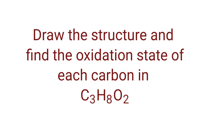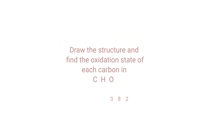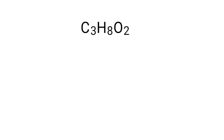Draw the structure and find the oxidation state of each carbon in propylene glycol. Propylene glycol is a neutral compound with overall oxidation number zero. Therefore we know that the sum of the oxidation numbers of the atoms is equal to zero. Now you can draw the structure of propylene glycol.